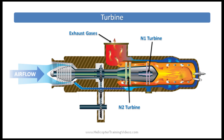There are two stages. There's an N1 or gas producer turbine, and then there's an N2 or power turbine. The N1 turbine, or gas producer, is used to power the compressor at the front and any other self-sustaining systems like the fuel pump and the oil pump. The N2, or power turbine, is used to power the rotor blades and any accessories such as air conditioning.